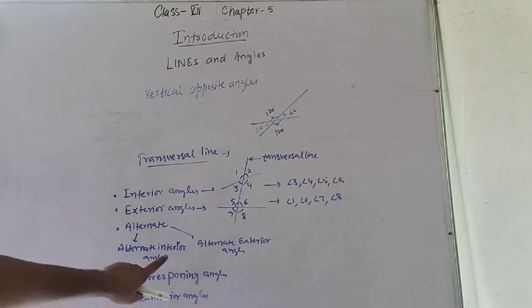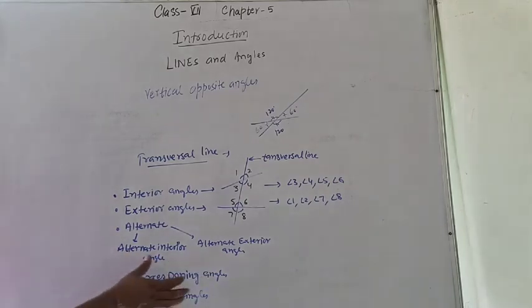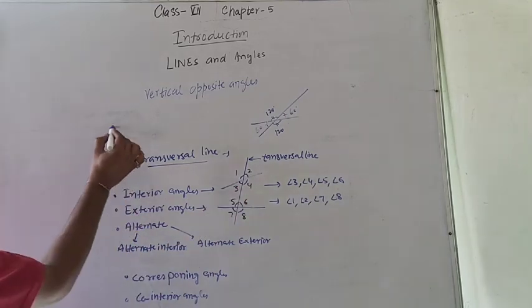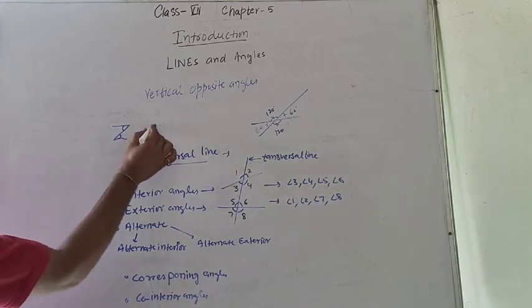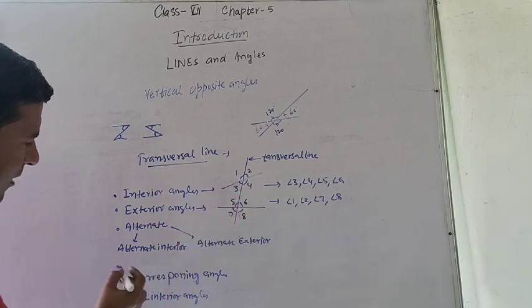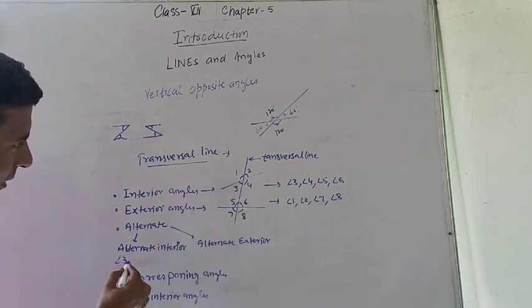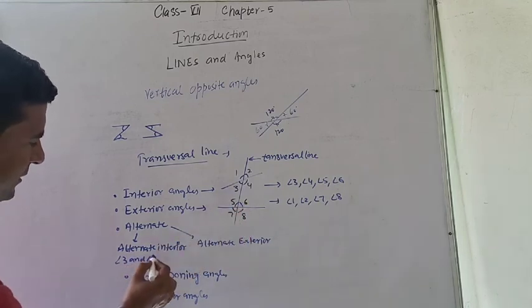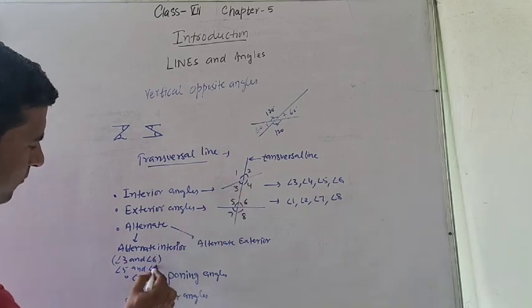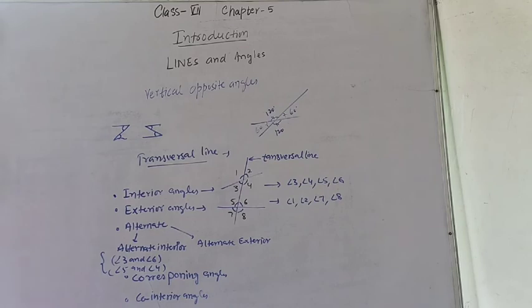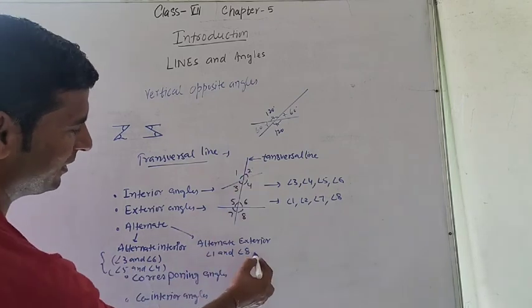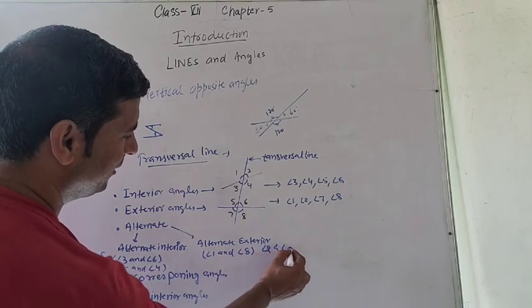Alternate interior angles are the pairs: angle 3 and angle 5, and angle 4 and angle 6. Alternate exterior angles are the pairs: angle 2 and angle 8, and angle 3 and angle 7.